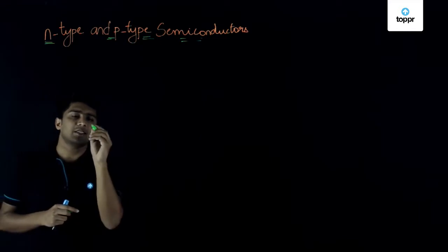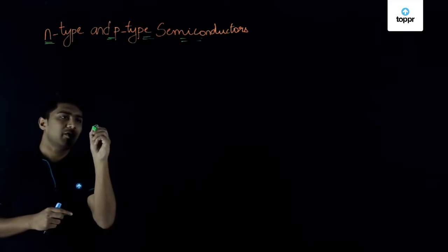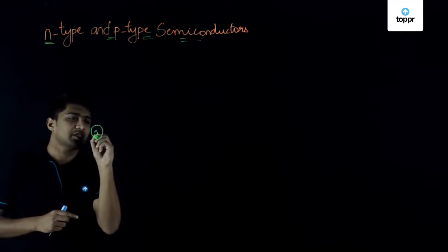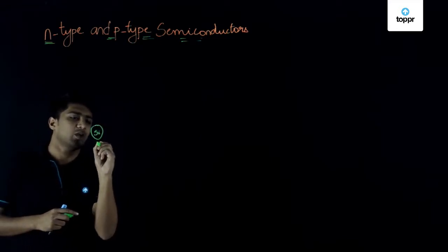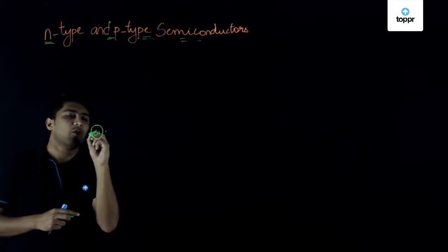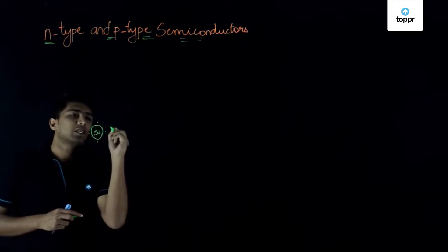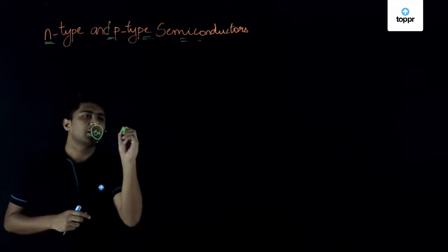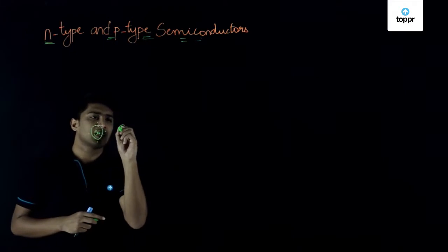As we have already discussed, if we take a lattice structure of a silicon atom, we know that it will have four electrons in its outermost shell, and when it becomes a crystalline structure,